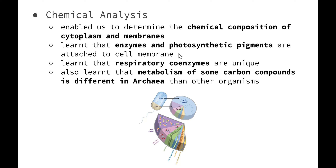Then we had the introduction of chemical analysis, which took it a step further and enabled us to determine the chemical composition of the cytoplasm and the cell membrane present in our prokaryotes. We also learned that enzymes and photosynthetic pigments are actually attached to the cell membrane — very different to our eukaryotes, where photosynthetic pigments are enclosed within the membrane in a chloroplast organelle. We learned that respiratory coenzymes are unique to prokaryotes and different to those in eukaryotes, and that metabolism of some carbon compounds is different in archaea compared to other organisms — we'll be looking at the difference between archaea and other types of prokaryotes in more detail in a few videos' time.